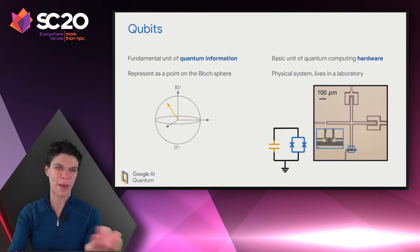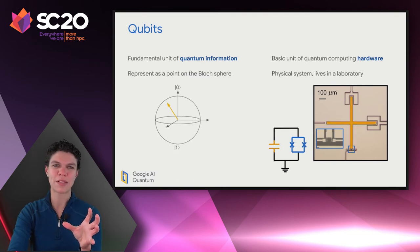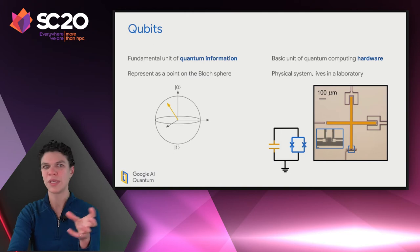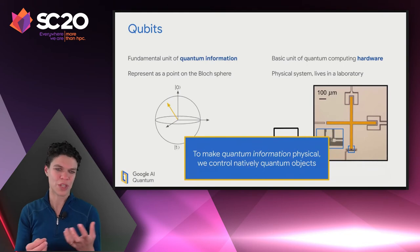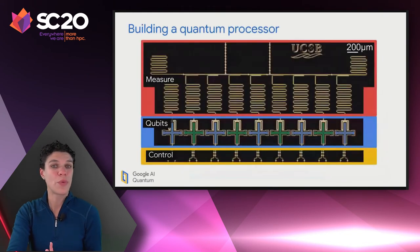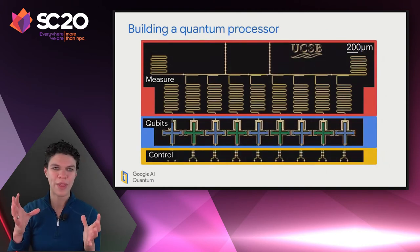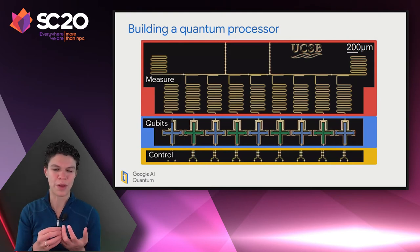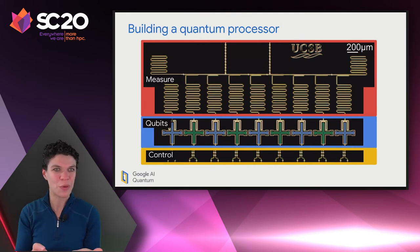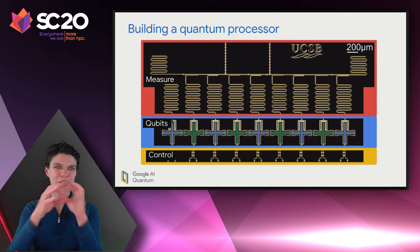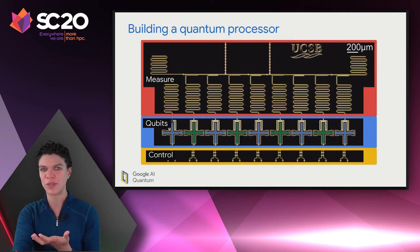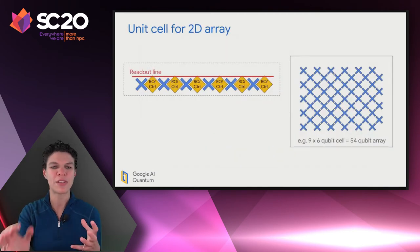In that micrograph, the capacitor is the big plus in the middle and the non-linear inductor, or squid, is in the blue square below. We build these structures and use them as natively quantum objects, which allow us to make quantum information physical. We want to build our quantum processor in a two-dimensional array. State-of-the-art devices before we started were just single rows — there's a lot of other stuff on this chip too, with control wiring coming from the bottom and readout-related circuitry from the top, leaving really no space to align qubits row by row.